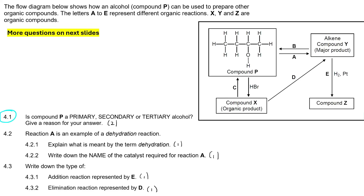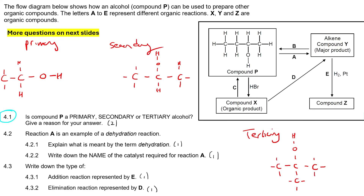We've spoken about this before. What you do is — let me quickly show you what a primary looks like, then secondary, then tertiary. All I want you to do is look at the OH. Then look at the carbon that is touching the OH. Then ask yourself: how many carbons are touching that carbon? Well, there's only one carbon touching it. So that is a primary.